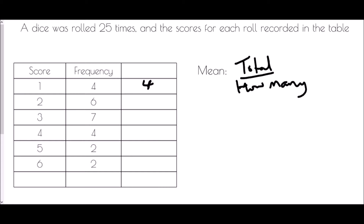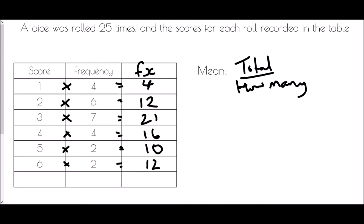If I scored two six times, that would be two plus two plus two plus two plus two plus two, which is 12. We can get this quickly with simple multiplication — multiplying the score by its frequency. So three times seven is 21, four times four is 16, five times two is 10, and six times two is 12. This column is occasionally called fx — f for frequency and x for the score.